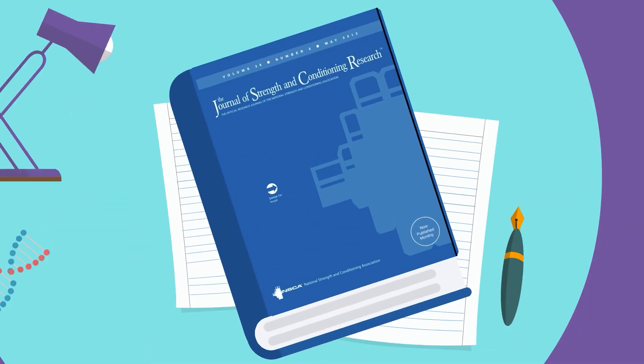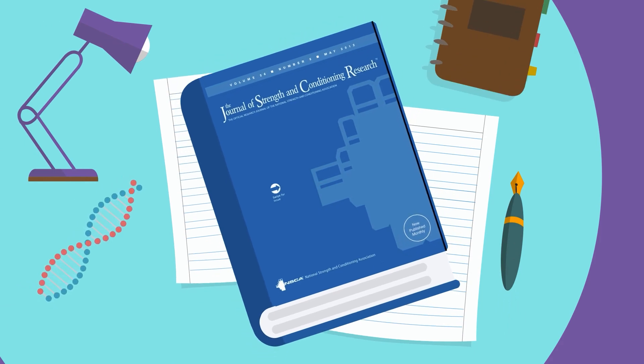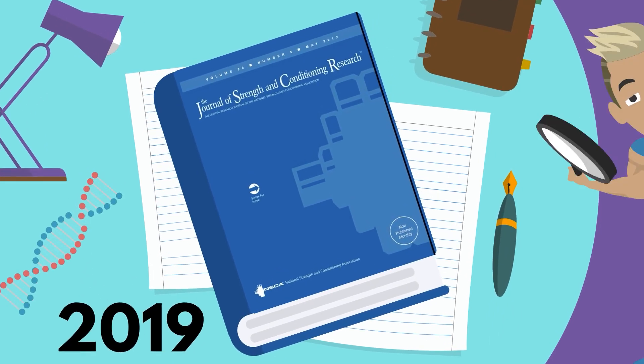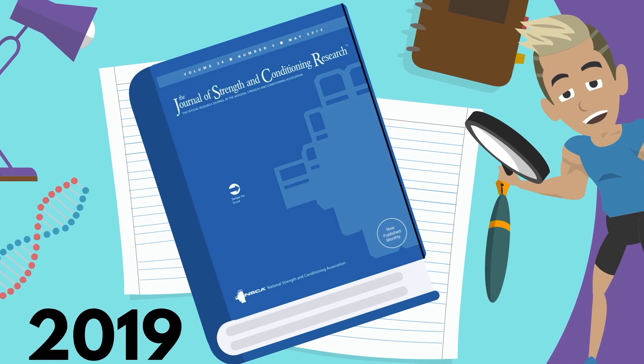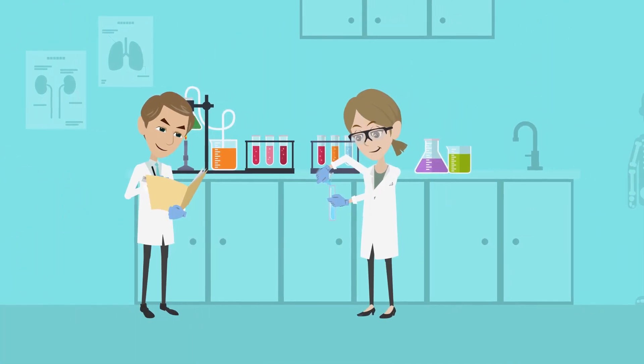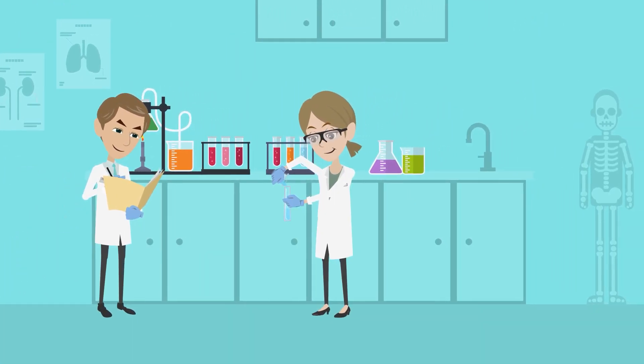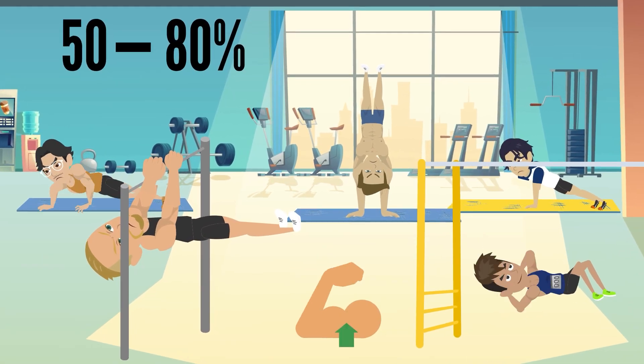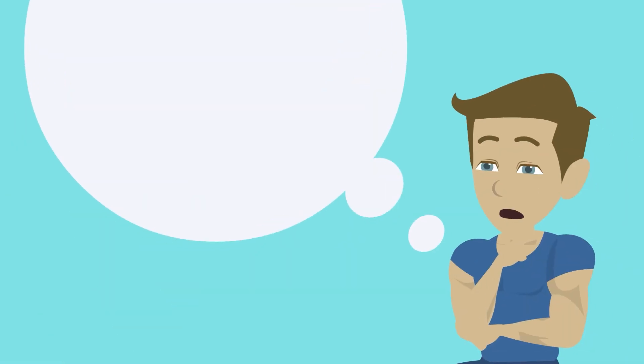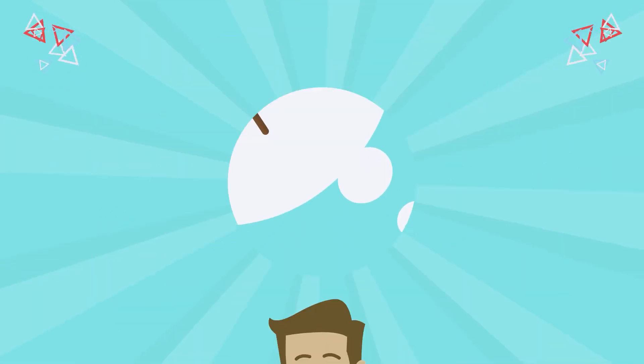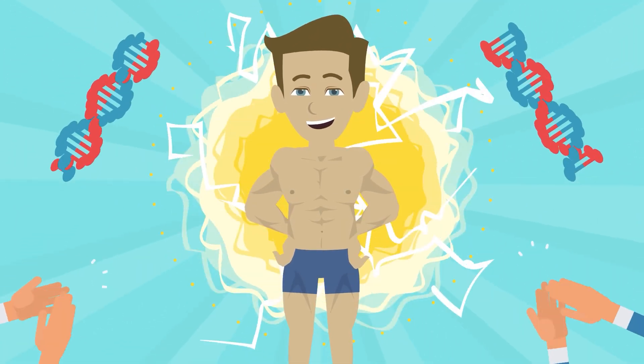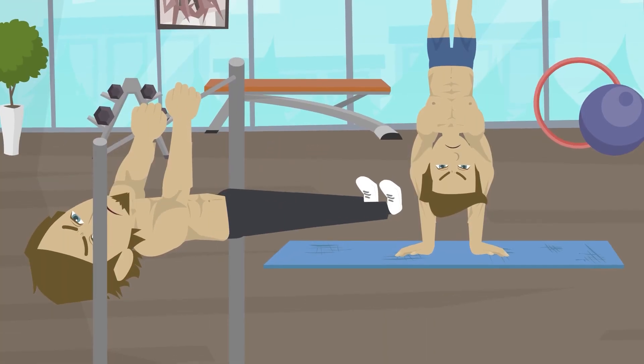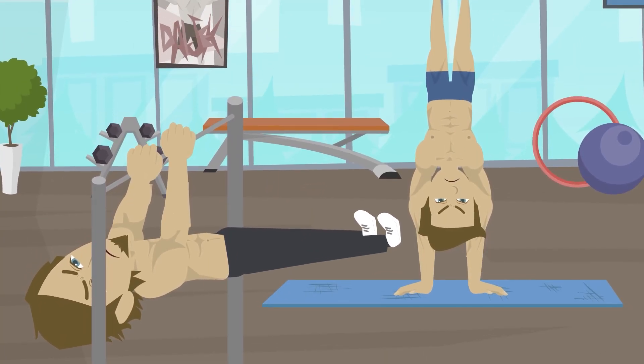In fact, another study in the Journal of Strength and Conditioning Research in 2019 brought this role into sharp focus. The researchers discovered that genetic factors accounted for a staggering 50 to 80 percent of the variance in muscle size changes resulting from resistance training. This would imply that your genetics might be the star player in determining your muscle growth and even your potential success in calisthenics.